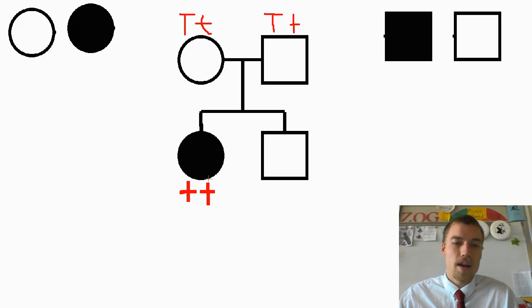Now what we're going to do now is we're going to try to figure out what is the genotype here, because he can either be big T, little t, or big T, big T, right, one or the other.